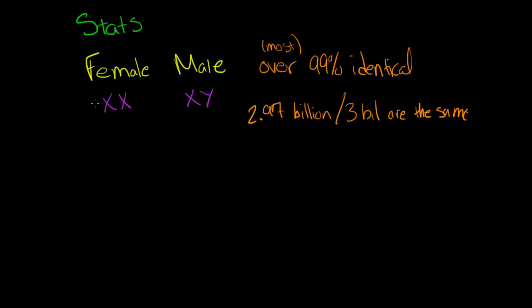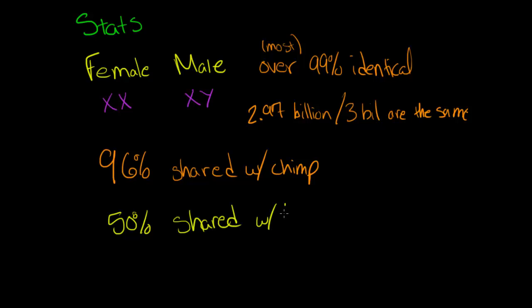You may be surprised to learn that humans actually share 96% of their genetic information with chimpanzees. And another crazy one, we actually share 50% with the banana.